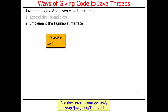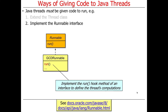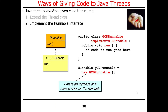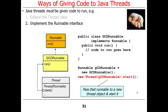Another way to give code to a thread is to implement the runnable interface. Runnable has a single method called run, which is a functional interface in Java. GCDRunnable implements Runnable, and we define the run hook method to explain what we want to happen. We make a new instance of a named class as the runnable — 'new GCDRunnable()' — and then we make a new thread, pass the runnable to the thread, and start it. So we make a new thread and give it the runnable to run.